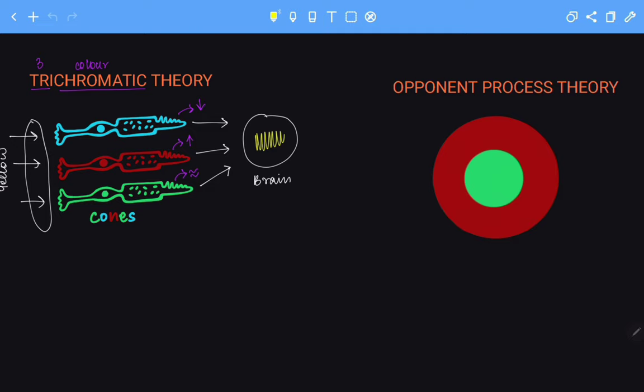On the other hand, the opponent process theory states that we have certain complexes with opposing actions.